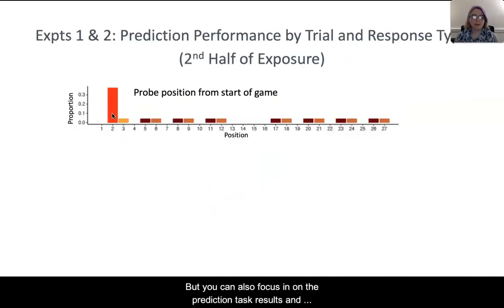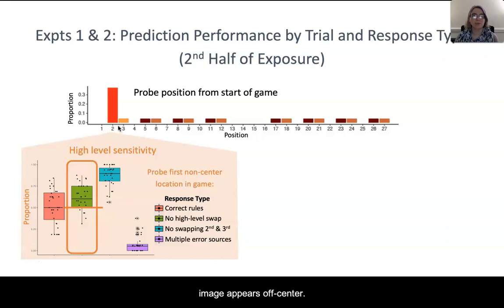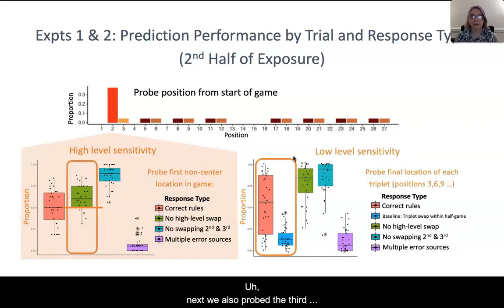But you can also focus in on the prediction task results. Here we're going to look at probes of the second position in each game, which is the first time that the image appears off-center. What we're really looking for is were they more likely to select an image position that was one of the four positions that was congruent with the high level order rule, or did they select one of the four positions that was incongruent with the high level order rule for that specific game? People are sensitive to that and they're able to select one of the four correct locations above chance. That shows they're able to use even just the background image and the target image to help them bring online which set of positions they should expect to have the target appear in first.